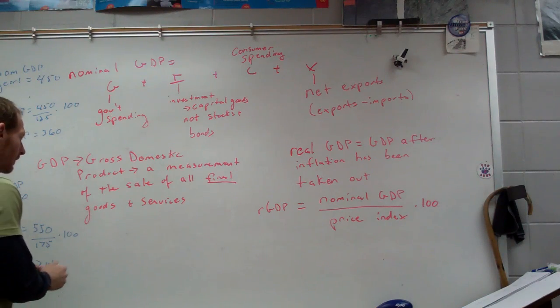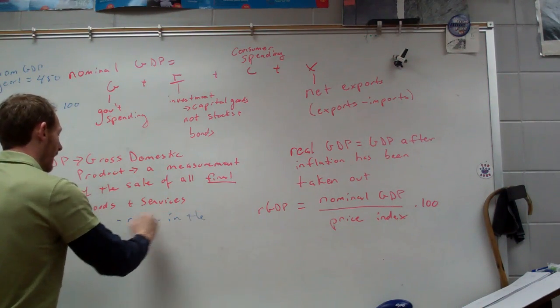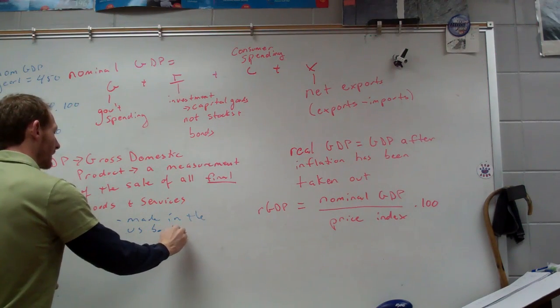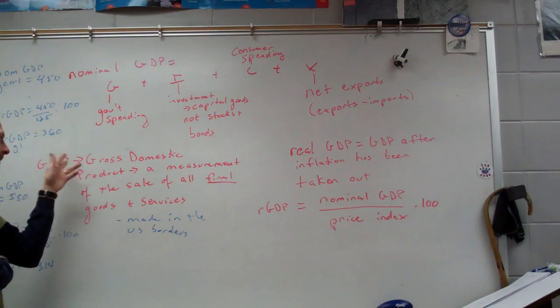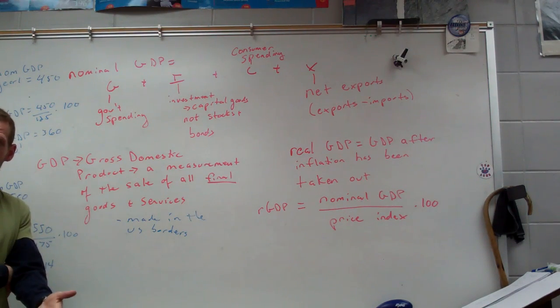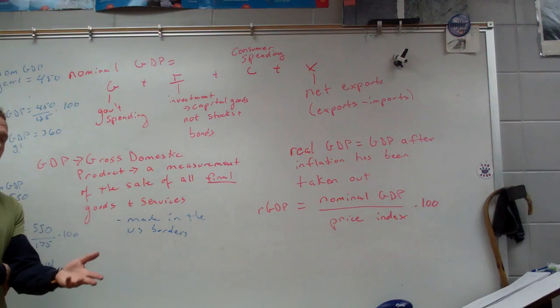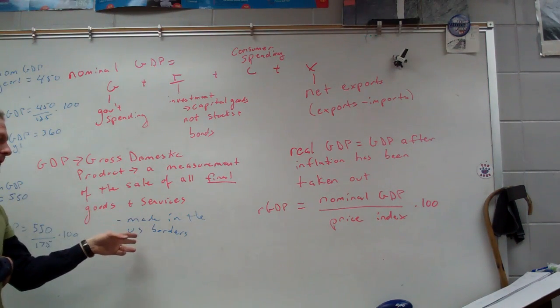And this is made in the United States borders. For example, America has companies that make stuff in China or Mexico, that's not counted in GDP. But there are companies that are foreign countries that make stuff in America. For instance, Toyota. That is counted in GDP. So, it's all domestically made, a measurement of all the sale of final goods and services made in the borders of the United States.